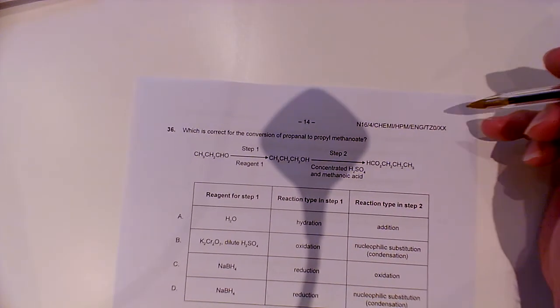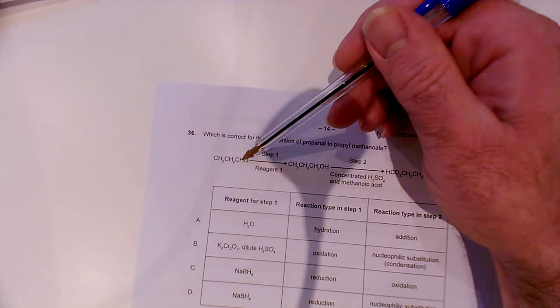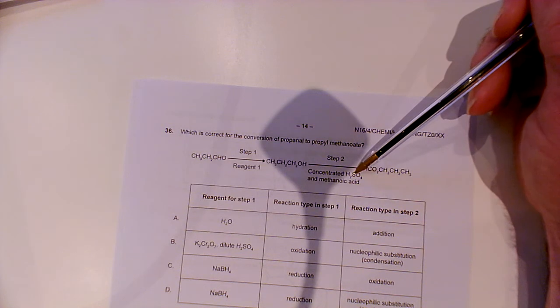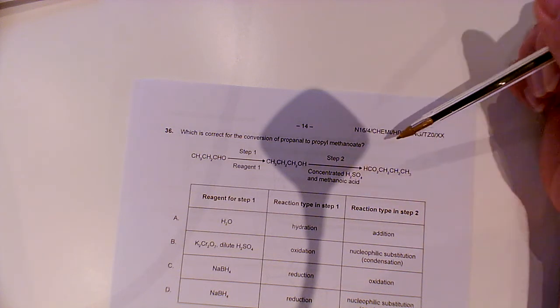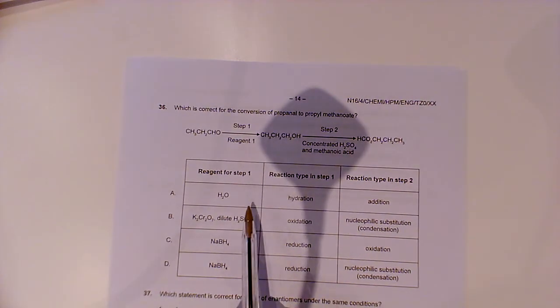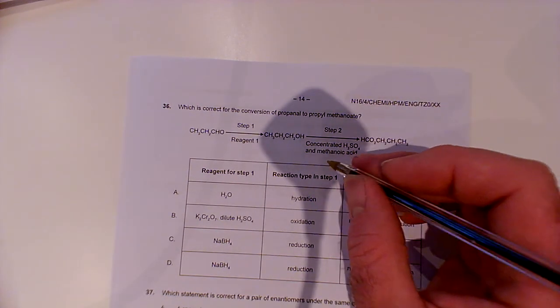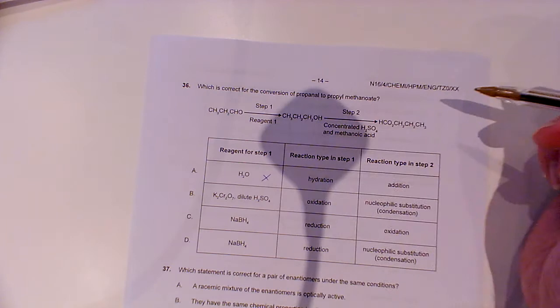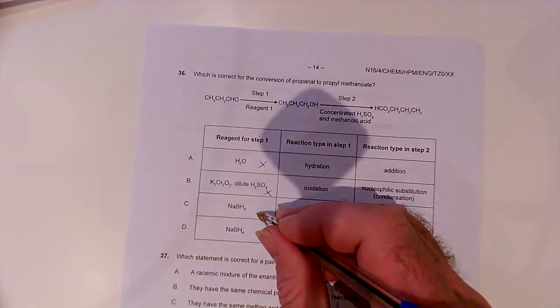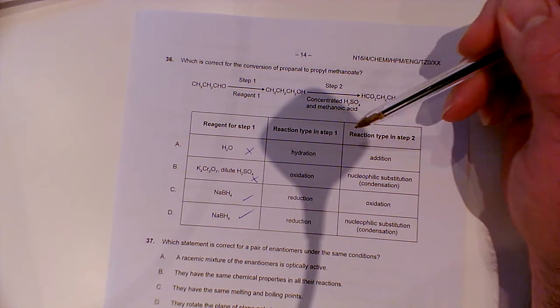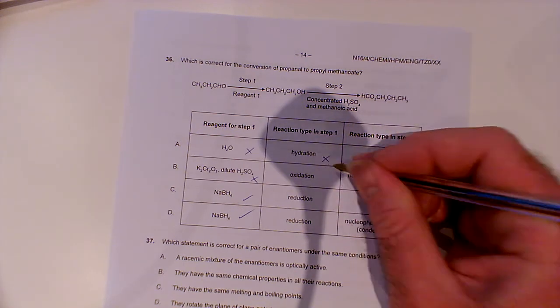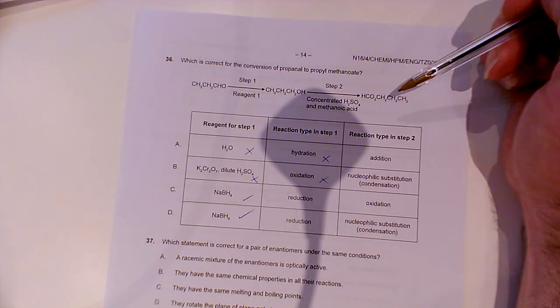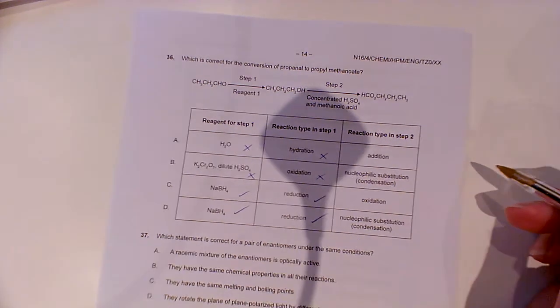Question 36. Which is correct for the conversion of propanol to propyl methanoate? We've got propanol being reduced to an alcohol. So step 1 and reagent 1. And then we've got concentrated acid and methanoic acid for an esterification for step 2. Looking through these possibilities then. Reagent for step 1. Well, water's not going to act as a reducing agent. Dichromate, that's a very powerful oxidizing agent. If anything, that would take it to a carboxylic acid. So sodium borohydride. And then reaction type in step 1. We're not adding water to it. It's not a hydration. We've eliminated that. It's not an oxidation. It's a reduction. Because basically, we're adding hydrogen to the aldehyde.